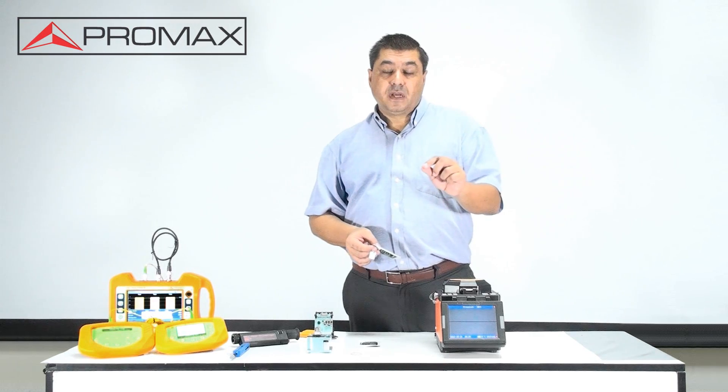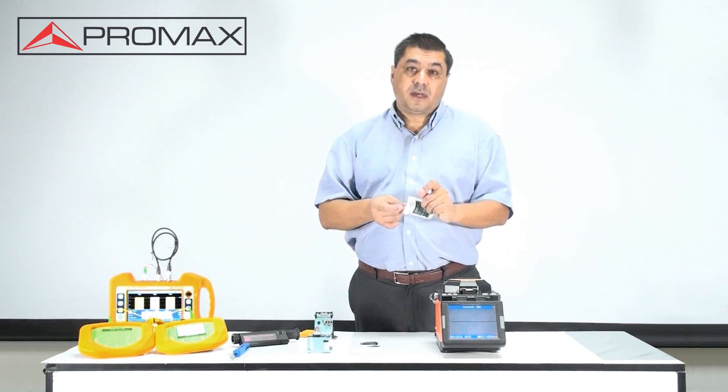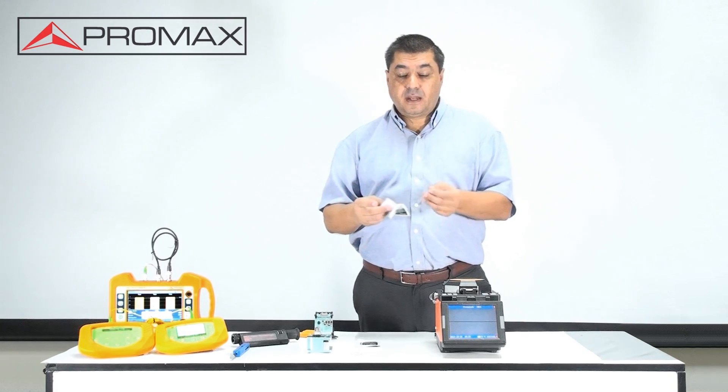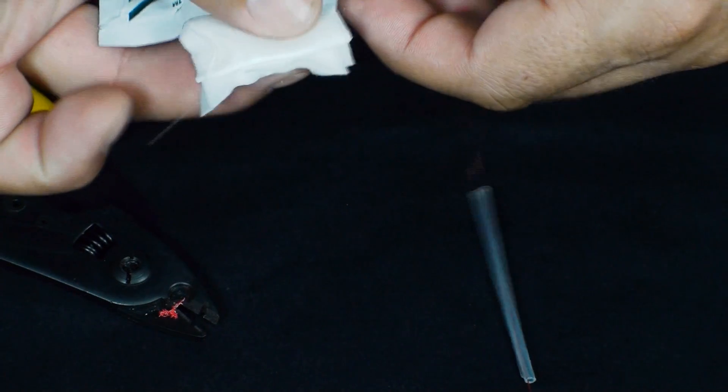Once the fiber is clean, we must use a cleaning wipe with isopropyl alcohol to remove the waste that may remain.